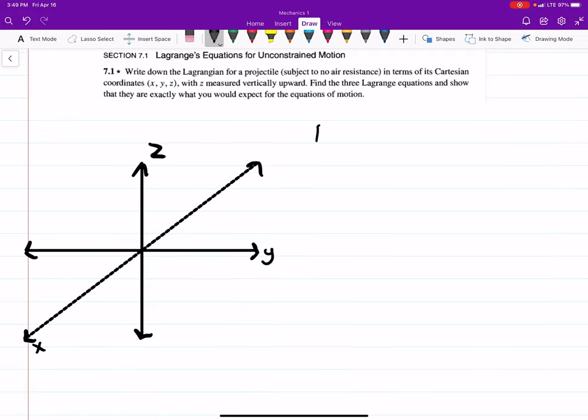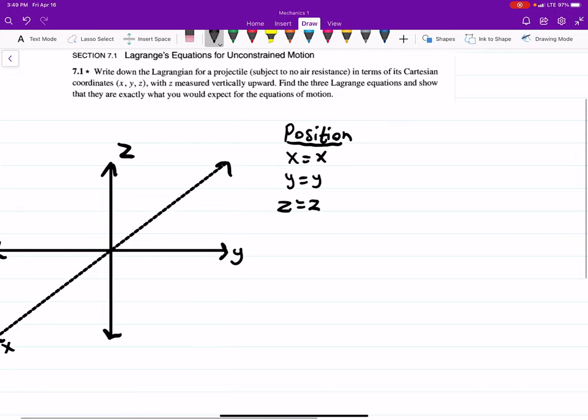So, just starting with our position, it's very easy. We'll just say X is equal to X, Y is equal to Y, Z is equal to Z.